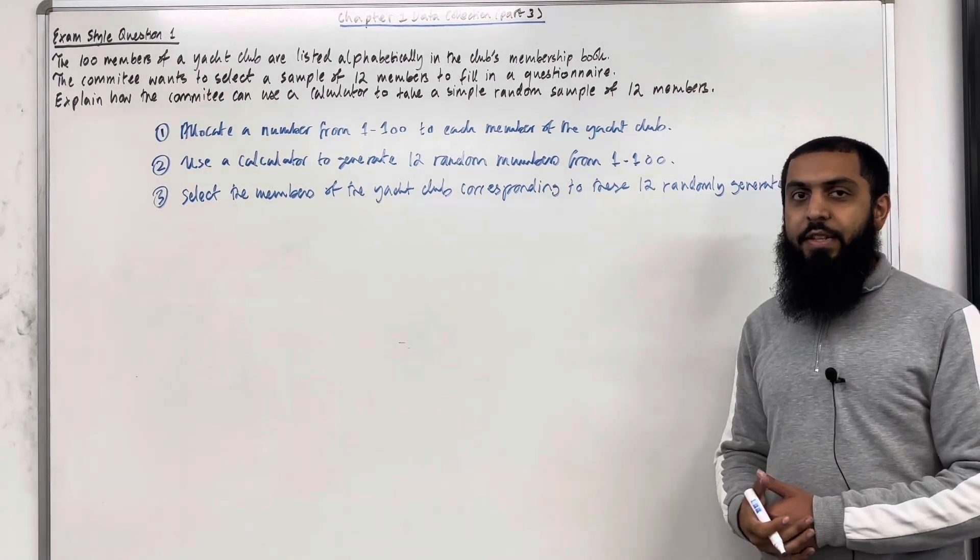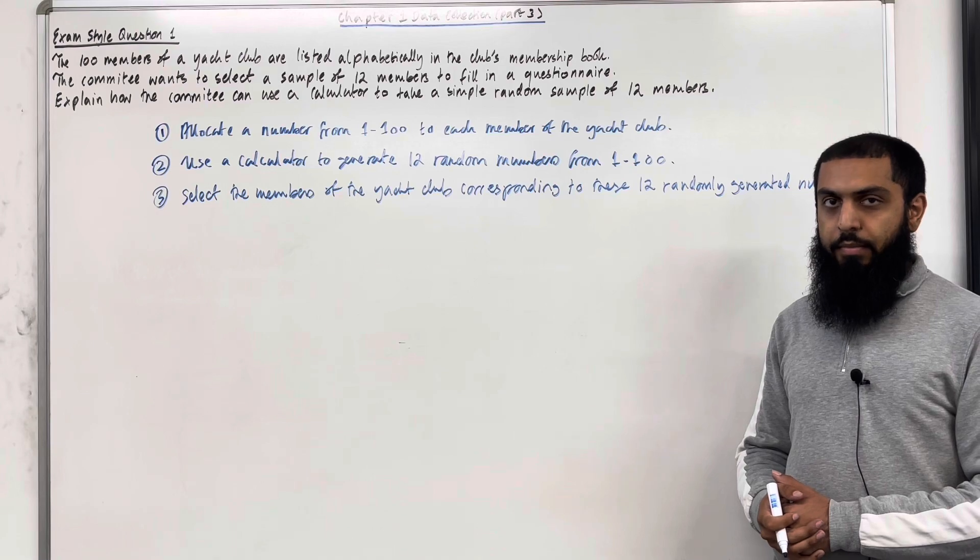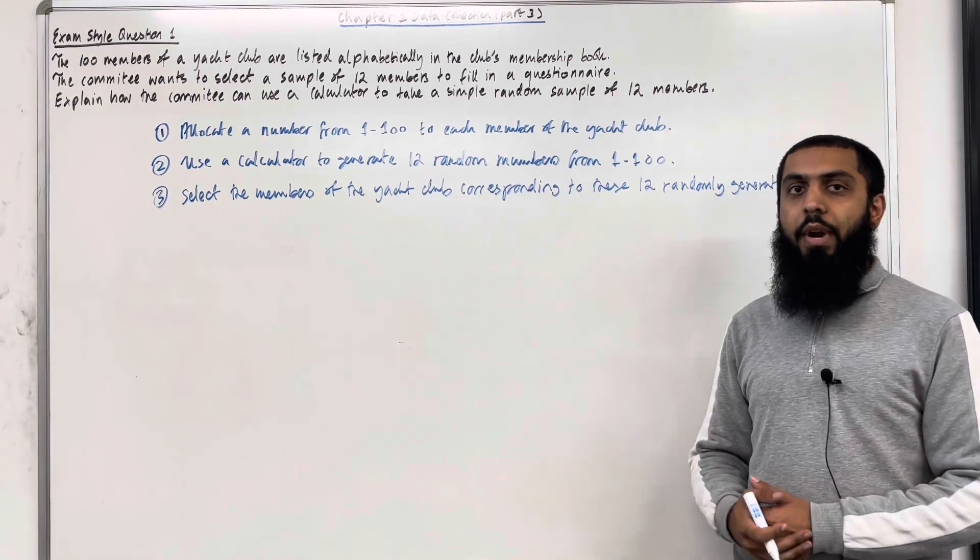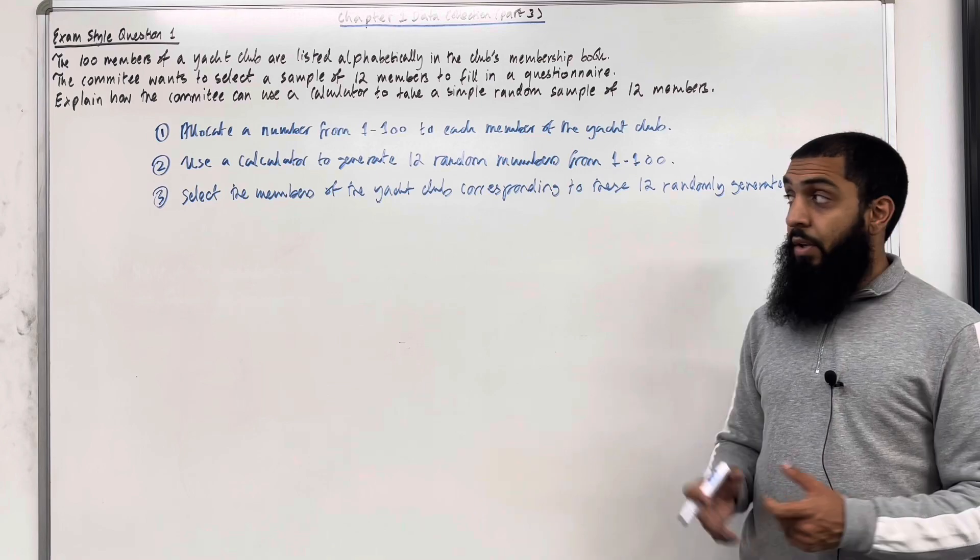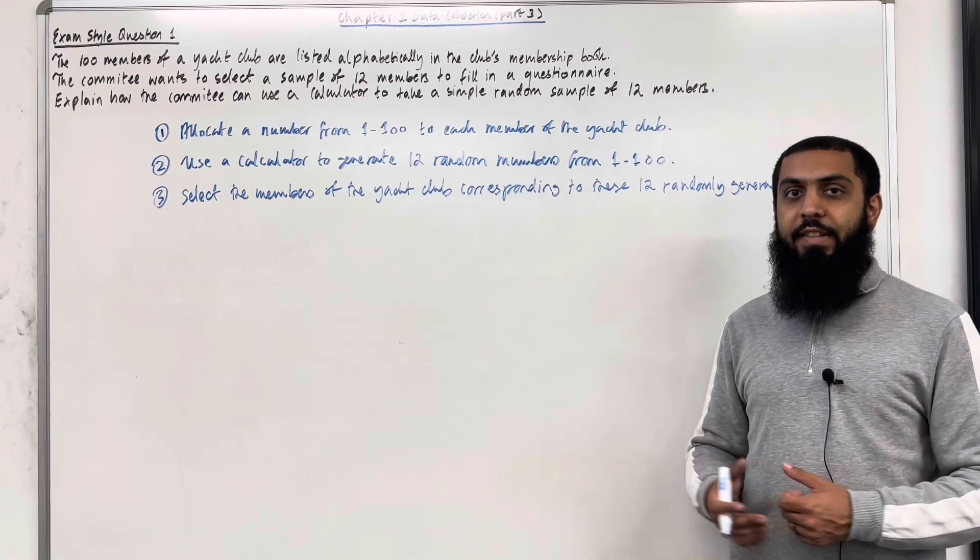And that completes exam study question 1. These are the 3 generic steps of simple random sampling process. You can adapt these steps for any exam study question.